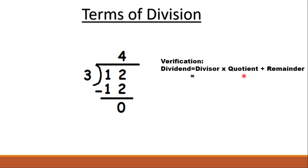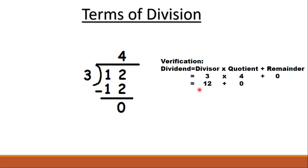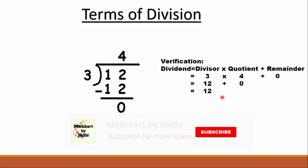We put the values in: divisor is 3, multiplied by quotient which is 4, plus remainder which is 0. So we get 3 times 4 plus 0, which equals 12 plus 0, which equals 12. Isn't it interesting that the answer we get is the dividend itself? Yes — 12 is the dividend!